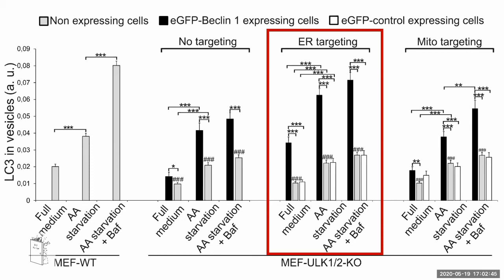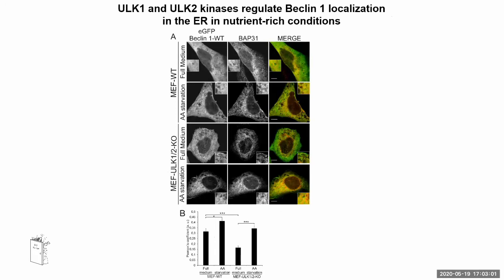The take-home message was that Beclin-1 targeted to the ER can help form autophagosomes in absence of the ULK kinases, but these autophagosomes are not fusing or maturing well. The same cell lines were used to check how Beclin-1 localization changed upon starvation. Interestingly, in both ULK wild-type and ULK double-knockout cells, Beclin-1 localization to the ER was enriched upon starvation. But compared to wild-type, in the ULK knockout there was much more Beclin-1 in the ER, suggesting that ULK1 and ULK2 regulate Beclin-1 localization in the ER under nutrient-rich conditions.